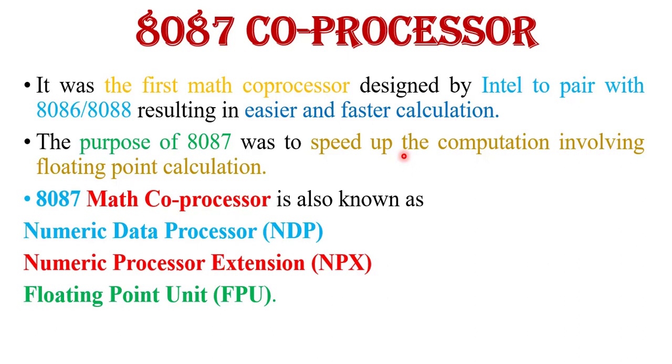The question arises why we need a coprocessor for 8086 or 8088 microprocessor. The purpose of 8087 was to speed up the computation involving floating point calculation. 8087 is developed to work with 8086 or 8088 microprocessor.